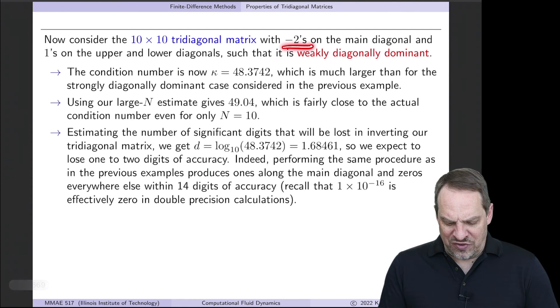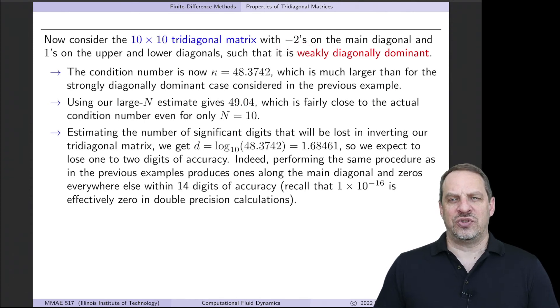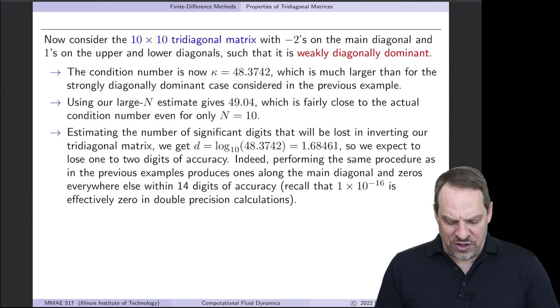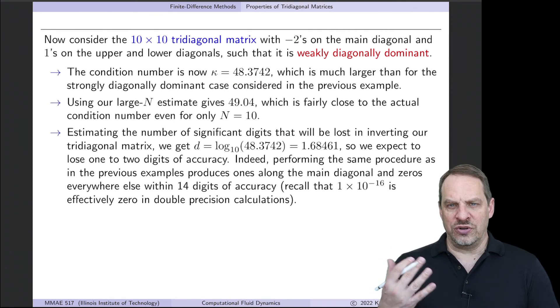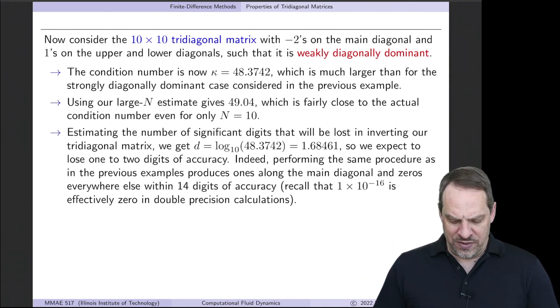Now let's look at the case where we have -2s down the main diagonal. So now it's a weakly diagonally dominant case. Once again, the 10 by 10 tridiagonal matrix. Now the condition number is 48.4, which is larger. It's not huge, but of course it's larger than 3. The large N approximation would be 49.04. So again, it's actually not that bad in approximation, even for only a 10 by 10 matrix.